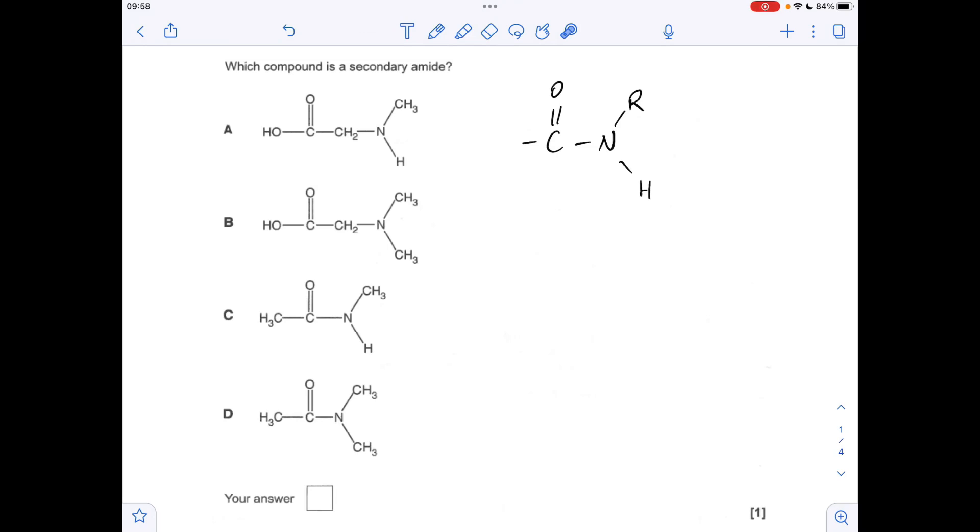Okay, so the first question we've got to establish which of the compounds A to D is the secondary amide. So here I've got the generic formula of a secondary amide. We need a C=O bonded to an N with one R group, one carbon group attached. So that means the nitrogen's got two carbon groups bonded, effectively making it secondary.